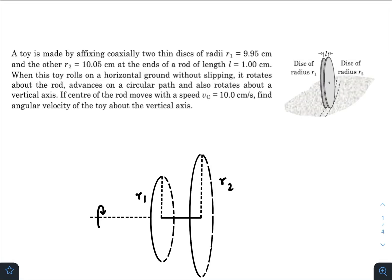Hey what is up everyone, I hope all of you are doing great. In today's question we have a toy made by fixing coaxially two thin disks each of radii r₁ and r₂ at the ends of a rod of length l. When this toy rolls on a horizontal ground without slipping, it rotates about the rod, advances on a circular path, and also rotates about a vertical axis.